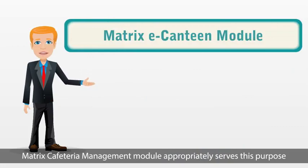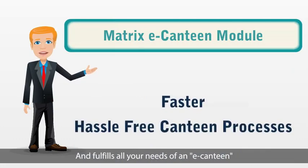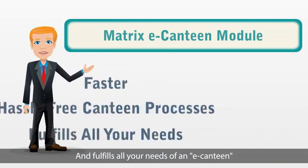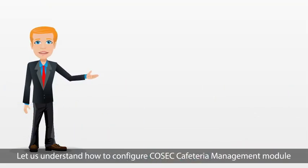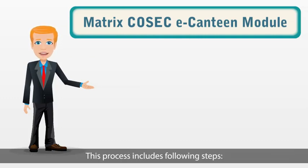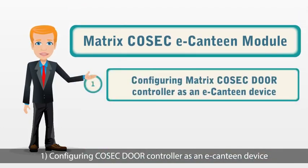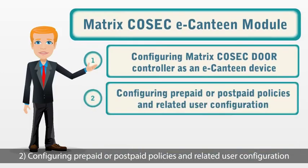Matrix Cafeteria Management Module appropriately serves this purpose. It focuses on the concept of faster and hassle-free canteen processes and fulfills all your needs of an e-canteen. Let us understand how to configure the Cosec Cafeteria Management Module. This process includes the following steps: one, configuring a Cosec door controller as an e-canteen device; two, configuring prepaid or postpaid policies and related user configuration.